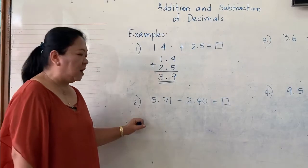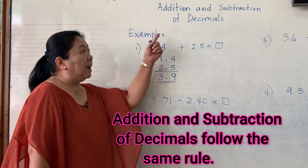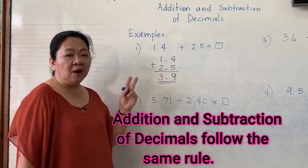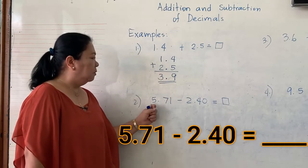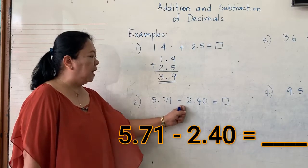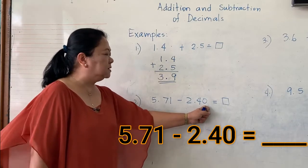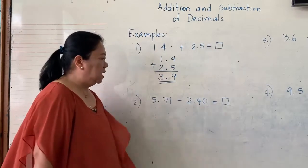Now, for subtraction, I combine addition and subtraction because these two operations follow the same rule. Look here. 5.71 minus 2.40 is equal to what?